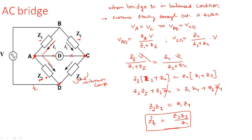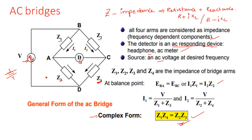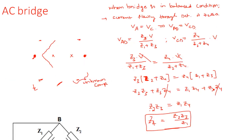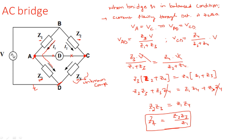So the final balance equation is Z1·Z4 = Z2·Z3. This is very simple — just multiply the opposite impedances and equate them to find the unknown value. In the next video we will see how to use this formula to measure unknown capacitance and inductance values.